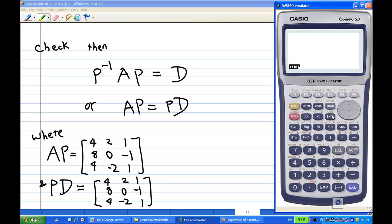I want to do some matrix calculation now. So I am going to press Option, matrix alpha A times matrix alpha P. Press Execute. So I have A times P as [4,2,1; 8,0,-1; 4,-2,1]. Now I can also find matrix P times D. Let me press Execute. Then F1 for matrix alpha P times matrix alpha D. Then execute again. I find the same matrix again: [4,2,1; 8,0,-1; 4,-2,1].